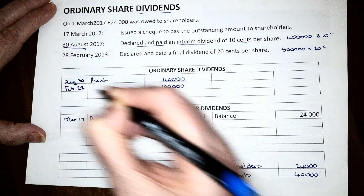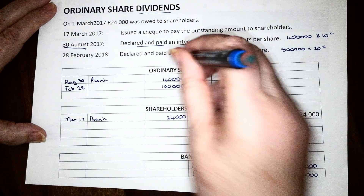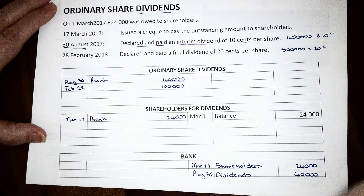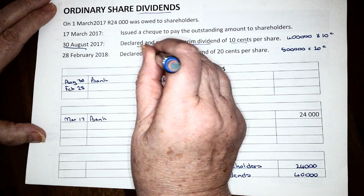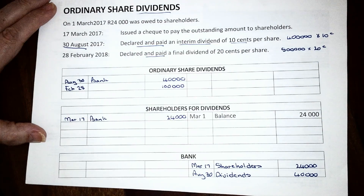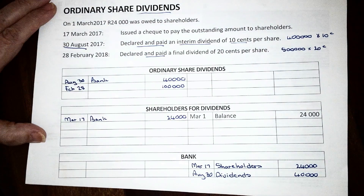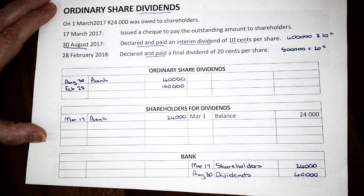In this specific case, it was written as declared and paid, which means the total amount was paid when the final dividend was declared. The transaction will be done in the same way as the interim dividend — the ordinary share dividends will be debited and the bank will be credited.